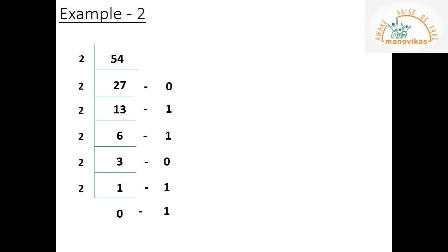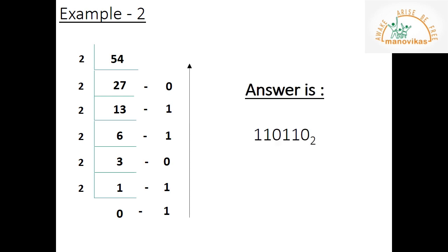Finally, take all the remainders from bottom to top as the answer. The binary equivalent of decimal value 54 is 110110 base 2 — reading remainders bottom to top: 1, 1, 0, 1, 1, 1, 0 to base 2.